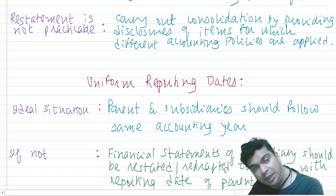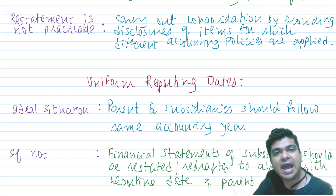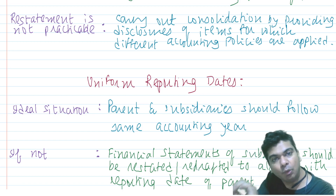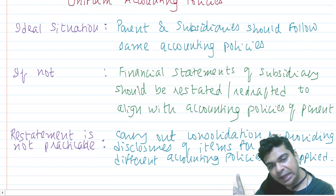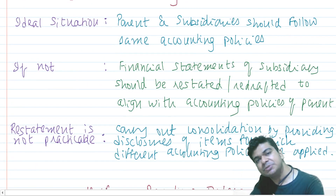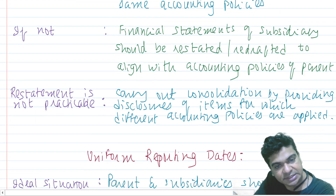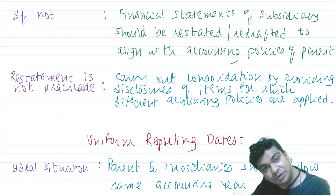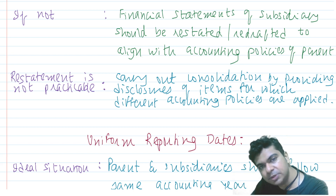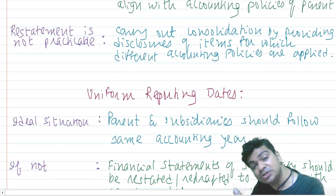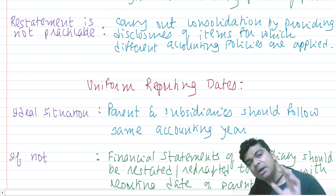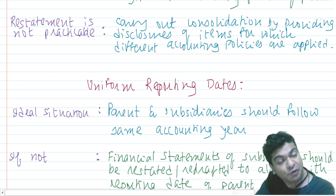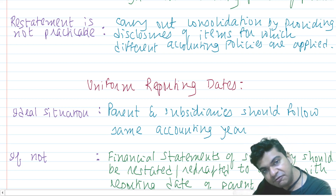However, if such redrafting is also not practicable, AS-21 says fine — go ahead and carry out consolidation, but please provide disclosures for those different items for which you are following different accounting policies. To summarize: ideally, parent and subsidiary should follow the same accounting policies. If not, redraft the subsidiary's financial statements to conform to the parent's policies for consolidation purposes only. If that's also not possible, carry out consolidation but provide the necessary disclosures so readers know which items have different accounting policies.